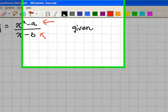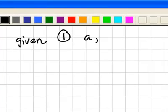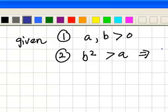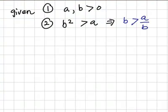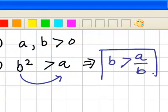Before we proceed, we also need to take note of the given conditions. In this particular question, the given conditions are A and B are greater than 0, and the other condition noted later is that B squared is actually greater than A. At this juncture, I want to note that if B squared is greater than A, this actually implies B is greater than A over B. This is so because when you multiply B over to the other side, the inequality doesn't change because we know B is positive. So this part is still correct and we need it in the later part of the question.